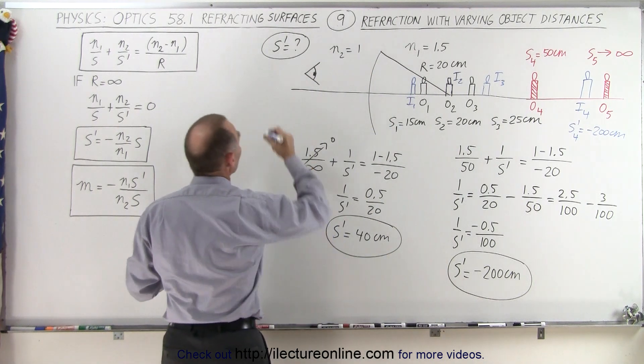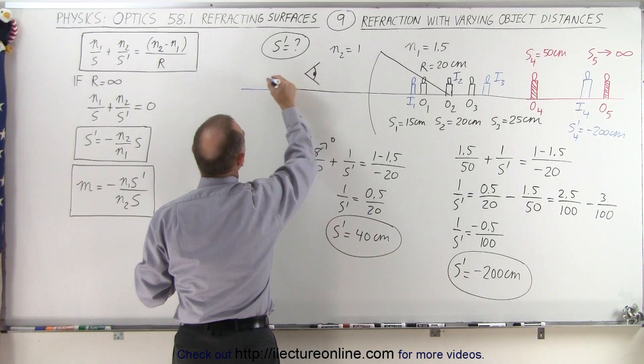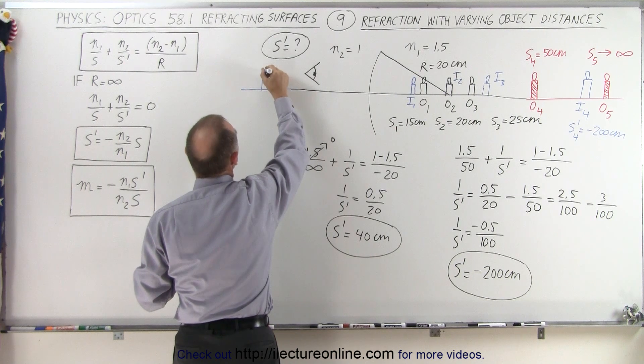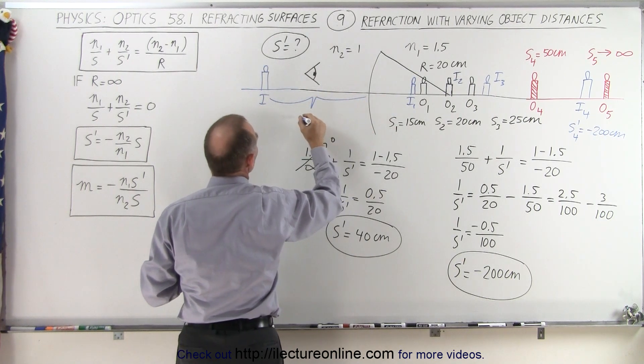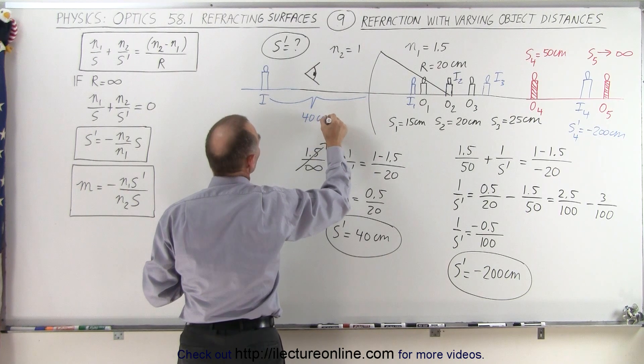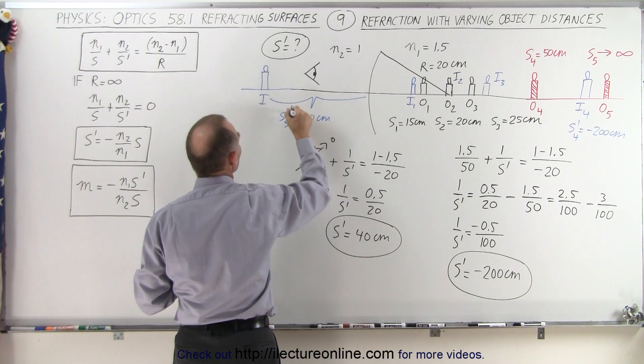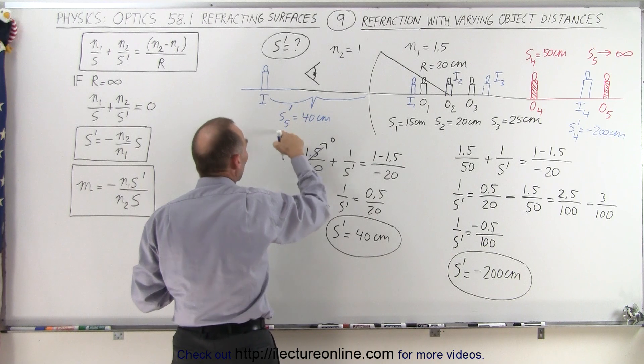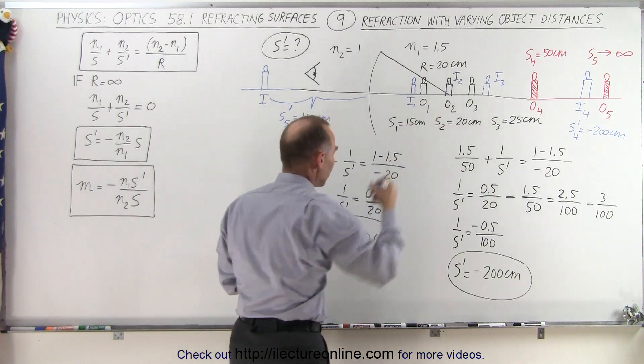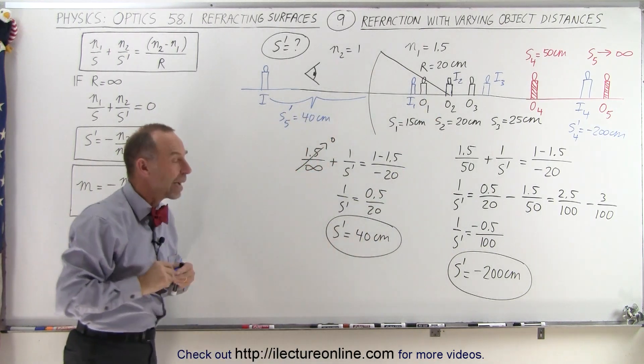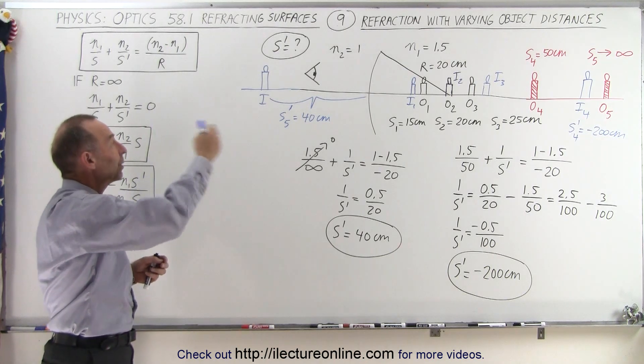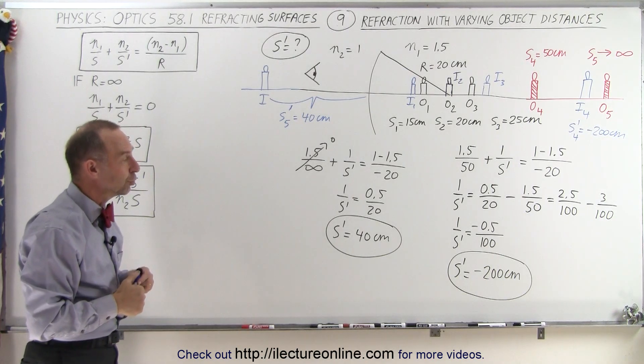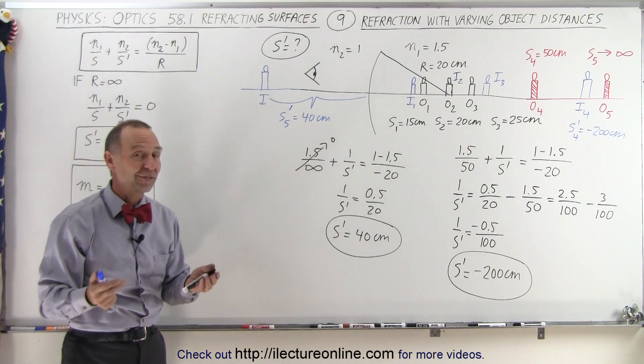So now we have a real image on the other side, right here. Here's our image. The distance to the vertex from there, that would be at 40 centimeters. So we'll call this s5 prime. And notice that it's twice the radius of curvature of the boundary. And so as the object goes to infinity, we end up with an image on the other side relative to the object, and that's how it's done.